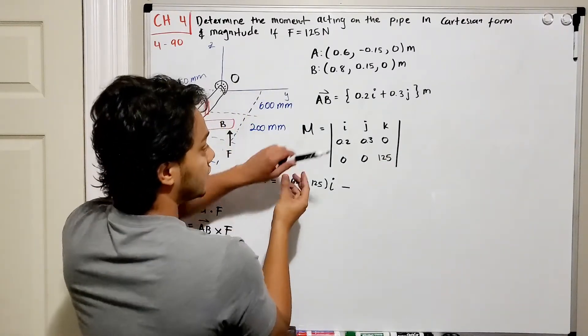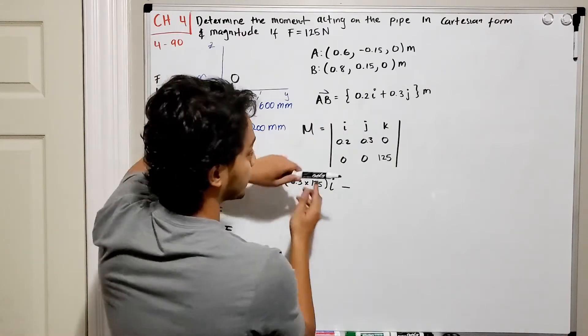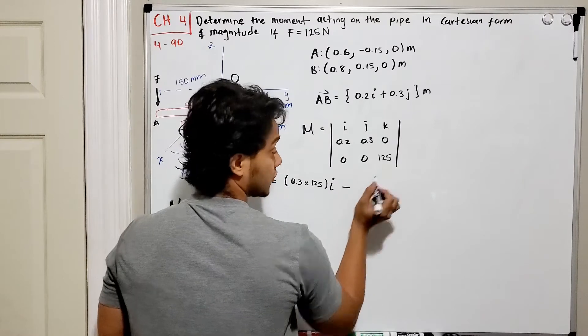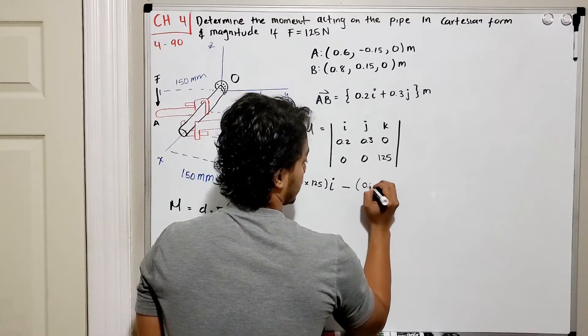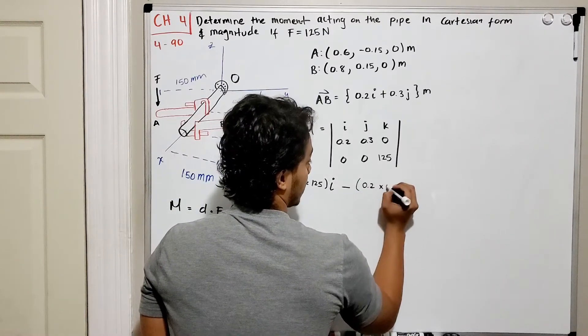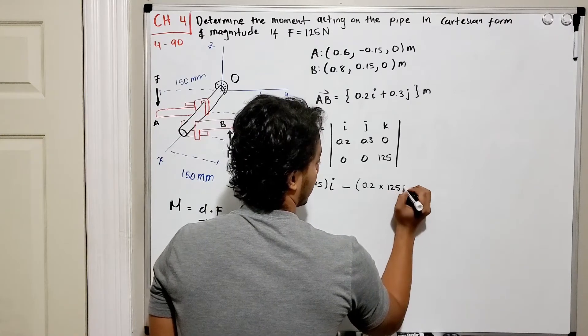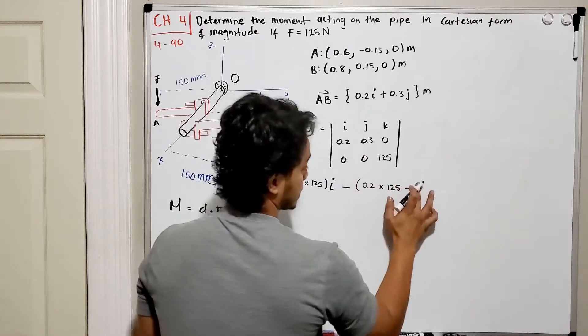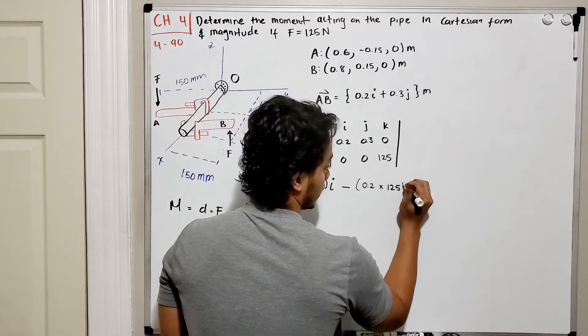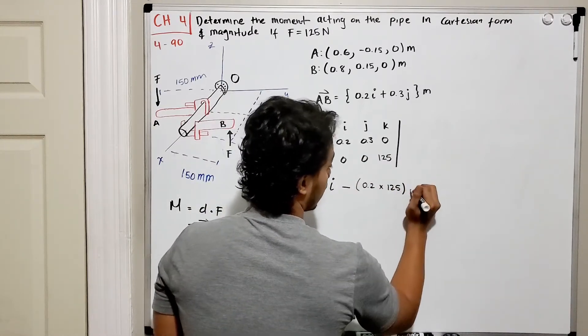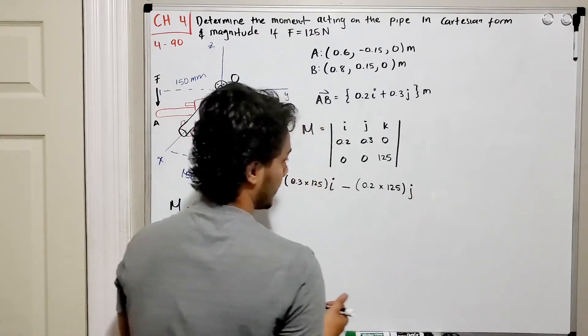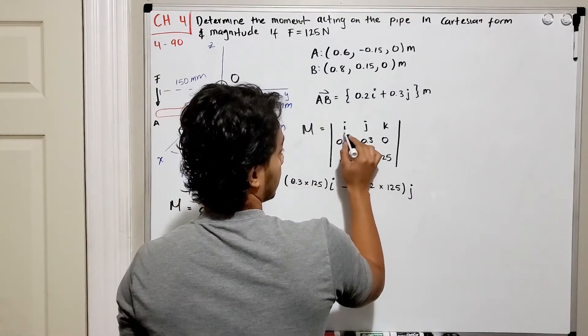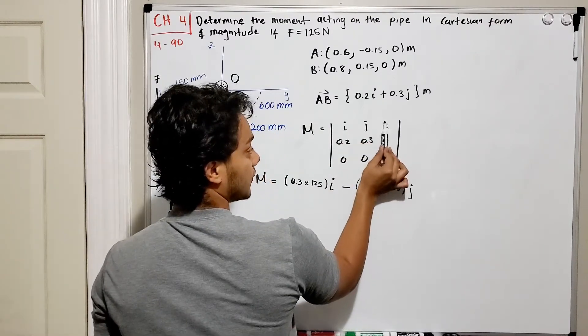And I'll hide this column. So if I do that I'll cross multiply 0.2 multiplied by 125, so 0.2 multiplied by 125 minus 0 times 0 gives me 0, so I don't have to do any difference and all this is in the j-direction.